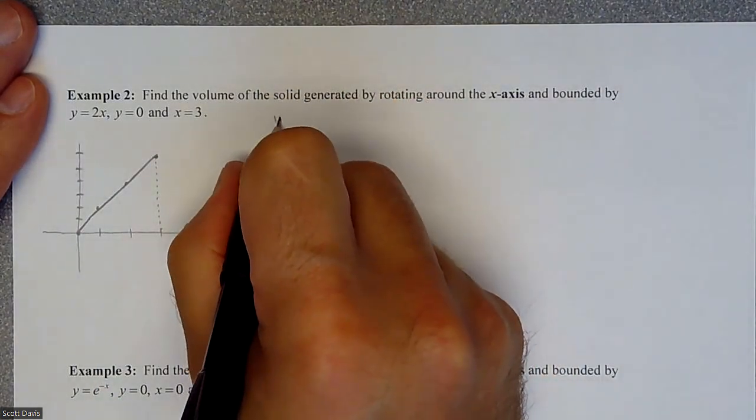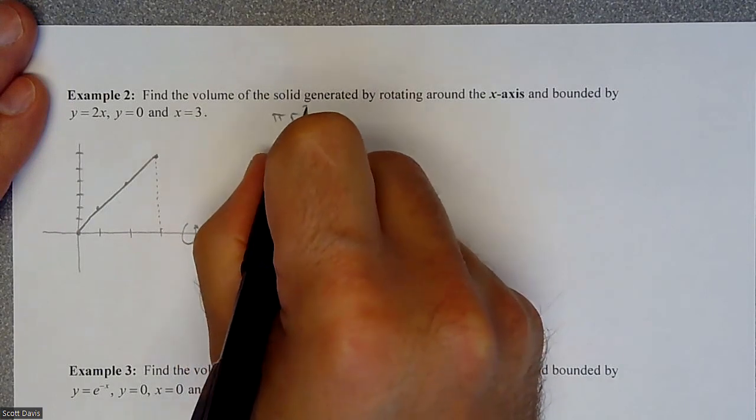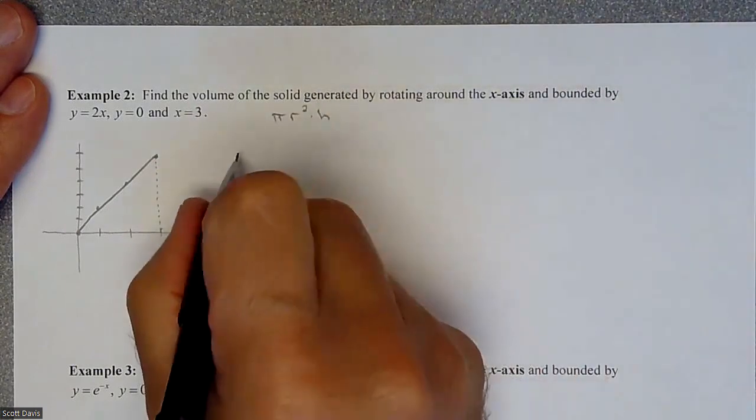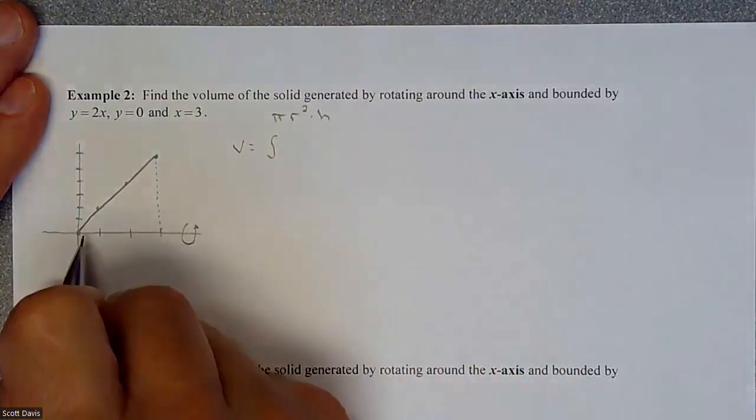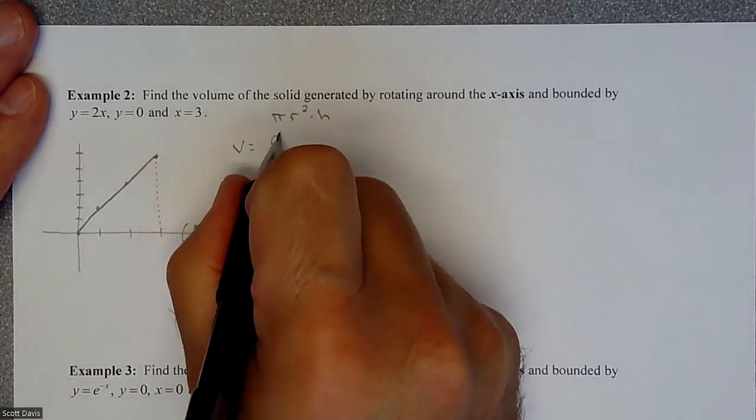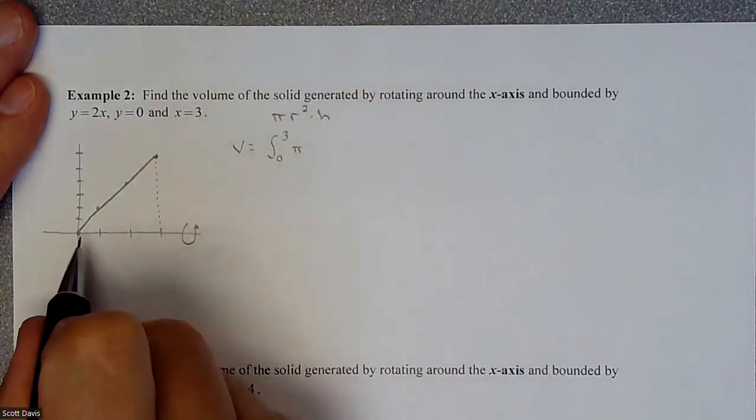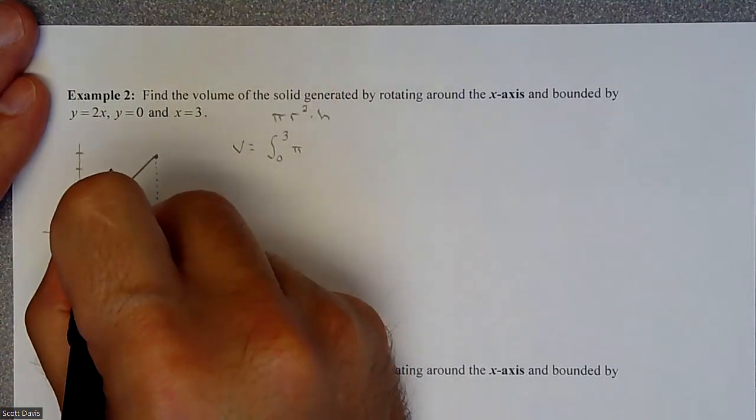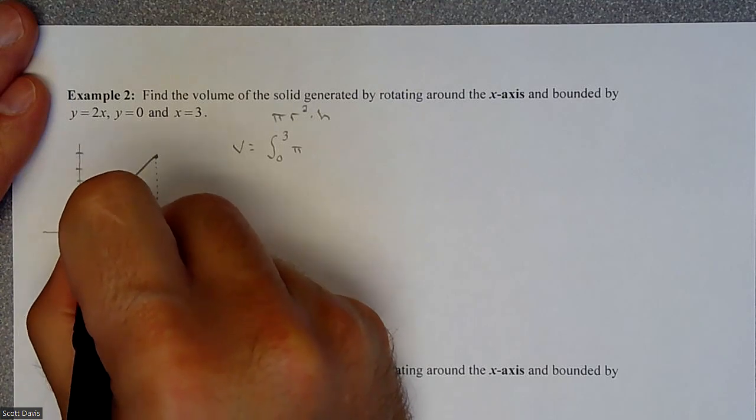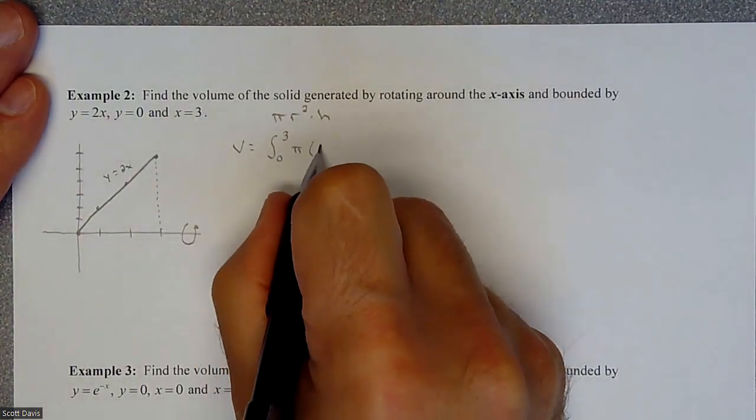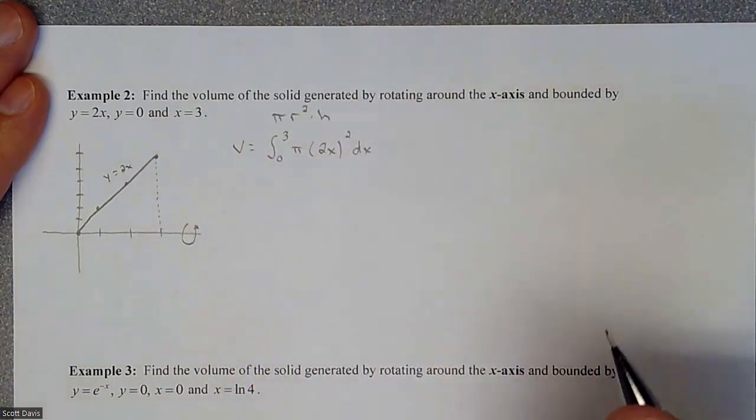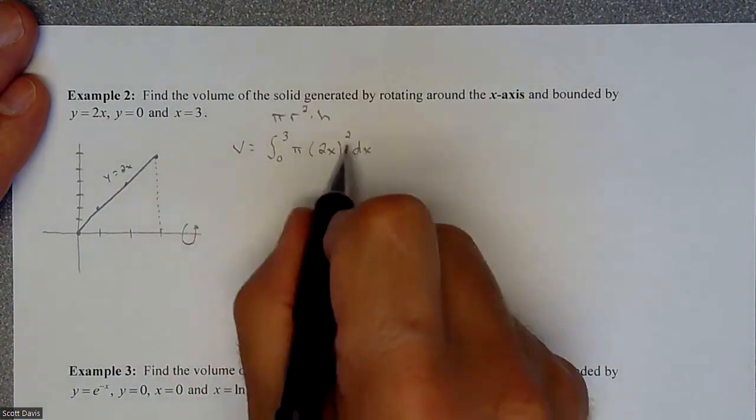We need to figure out what πr²h is, area of the base times the height. Our volume is going to be from 0 to 3, and then π. The radius is going to be these heights, and these heights are dictated by our equation y = 2x. So we're going to have (2x)² and then our height is always dx, which is the thickness getting infinitely small.